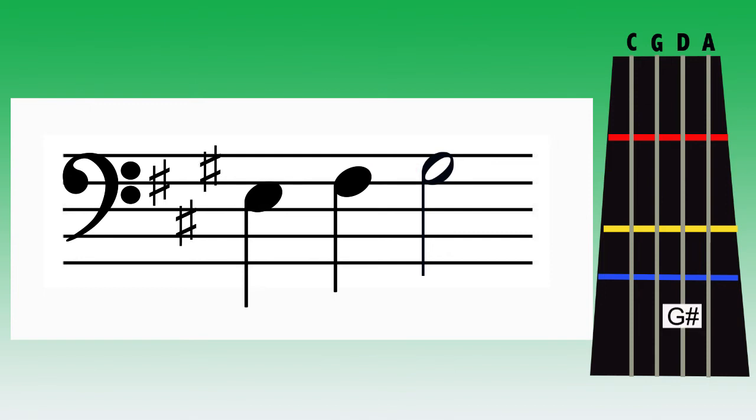Now let's try that with G sharp. If we have 3 sharps in the key signature, all F's, C's, and G's will be sharp. We were playing F sharp with 3rd finger, but now we need to use forward extension and place 2nd finger on F sharp so 4th can reach G sharp.